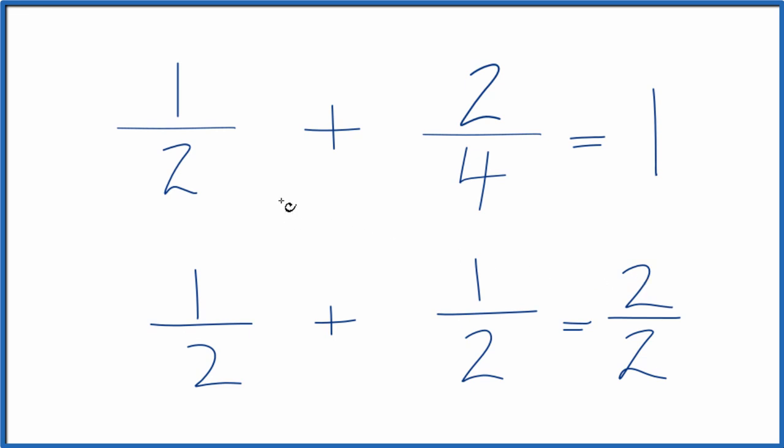You could also multiply the numerator and denominator by 2 here and that would give you 2 fourths. You could add 2 fourths plus 2 fourths, that would give you 4 fourths. And again that's equal to 1.